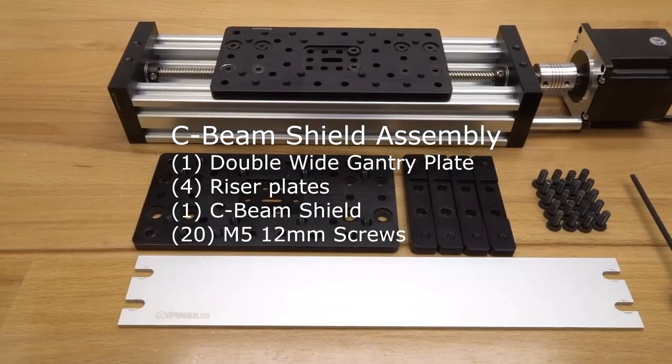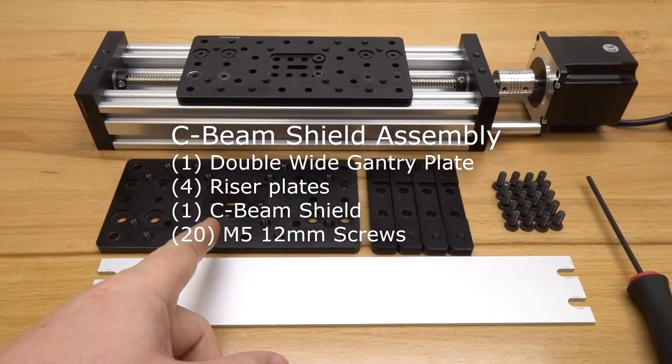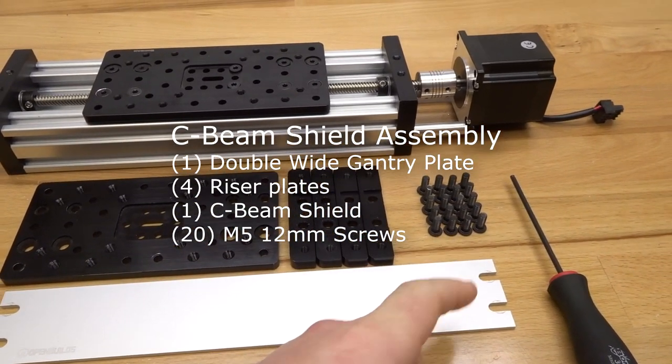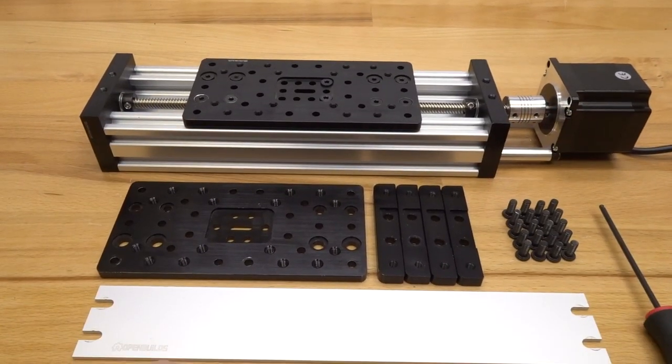Okay, for this assembly we're going to need to gather these parts: our double wide gantry plate, four riser plates, twenty 12 millimeter screws, our C-beam shield, and of course our actuator. So to get started...